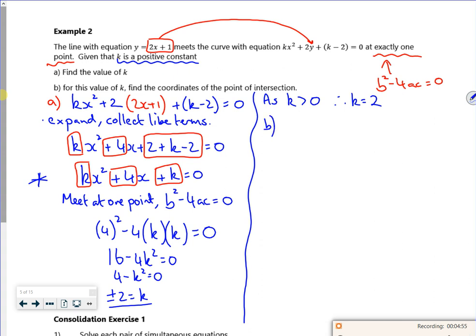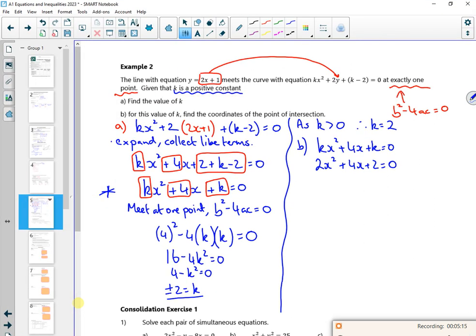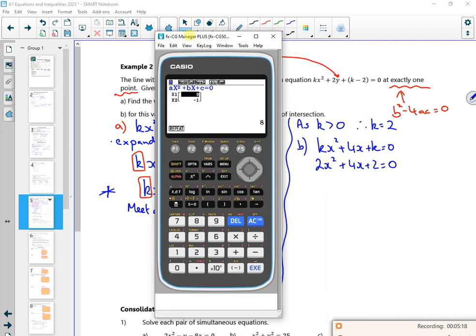So it says for this value of k, find the coordinates. So for my kx² plus 4x plus k becomes 2x² plus 4x plus 2 is zero. So now if I stick it into poly with the board which is working nicely. So 2, 4, 2. At school you would have divided through by 2, wouldn't you? And get x² plus 2x plus 1.